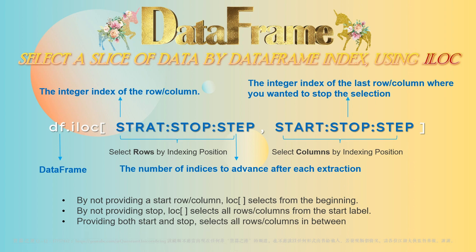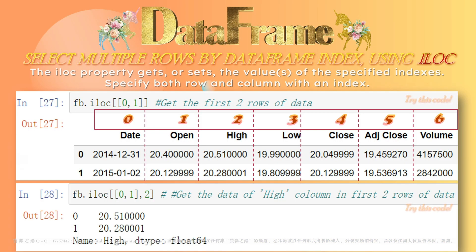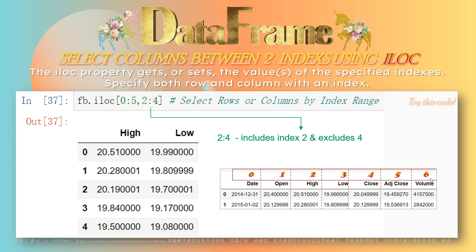If you want to select multiple rows and columns, we can use an integer index as a list with the .iloc attribute. To access more than one row, we need to use double brackets and specify the indexes separated by commas. We can also select rows and columns by range. This example selects columns between two indexes — we select data between the first row and the fifth row, from the third column to the fourth column. By doing so, we have retrieved a so-called slice of data from the DataFrame.